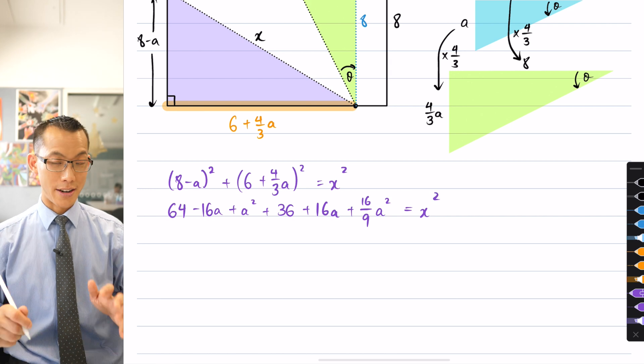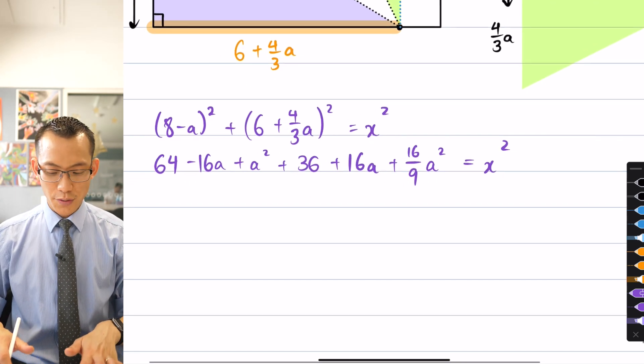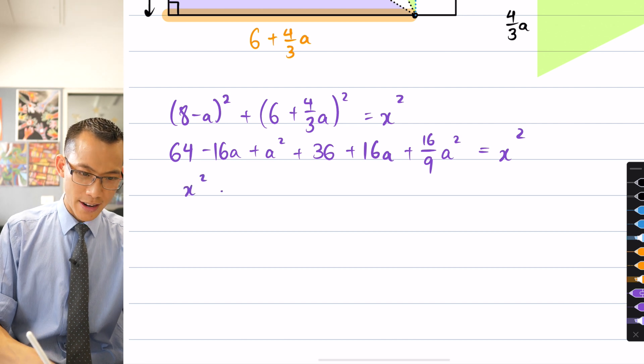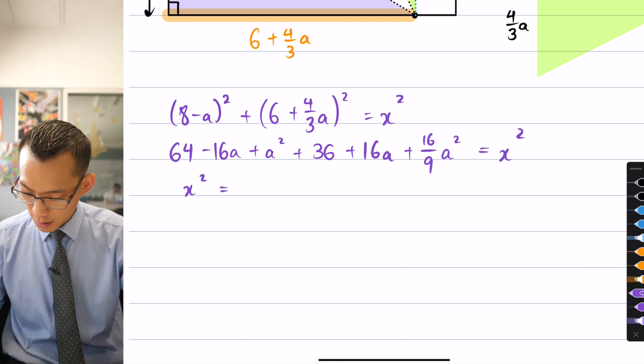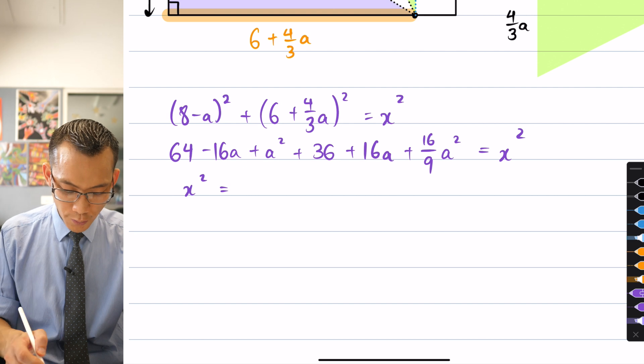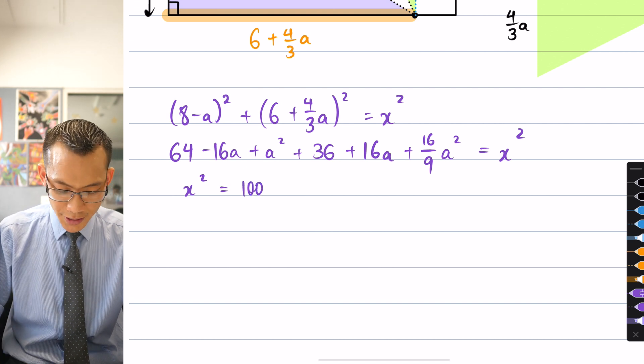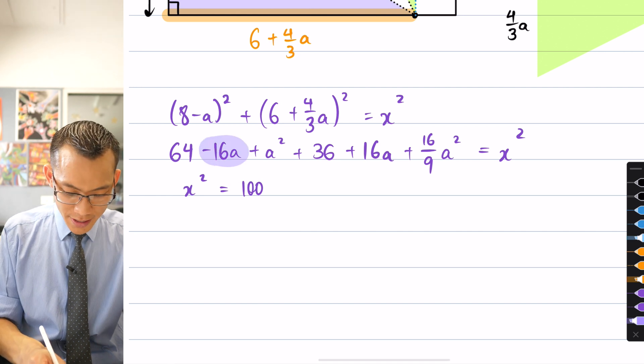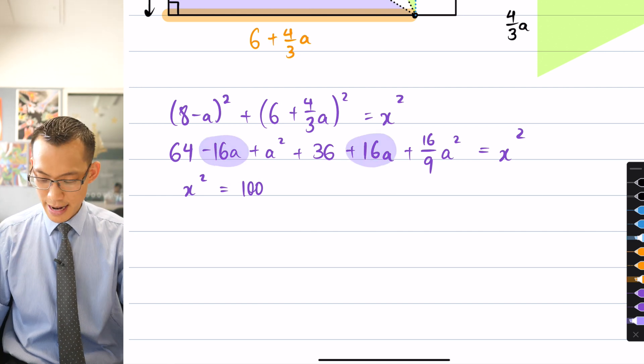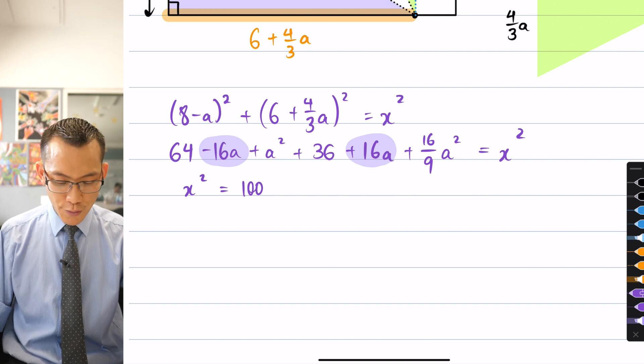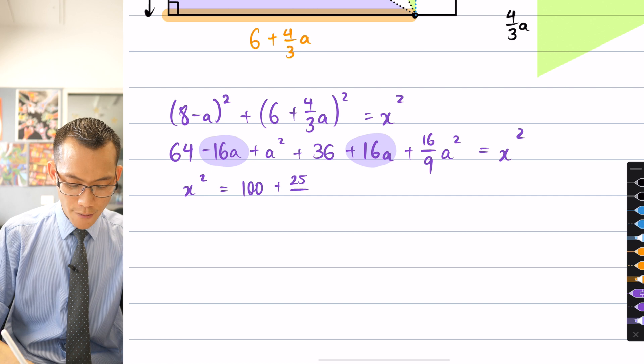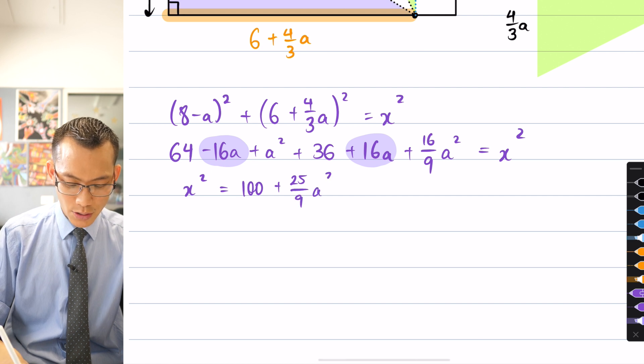That's all equal to X squared. You can see here, I've got a bunch of like terms here that I can just sort of collect together. If I make X squared the subject, looking closely, you've got 64 and 36, which gives you 100. This is really nice. I've got a take away 16 A and a plus 16 A, so they just eliminate each other. And then finally, if you combine your A squared terms, hopefully you can see this is going to be 25 over 9 A squared.